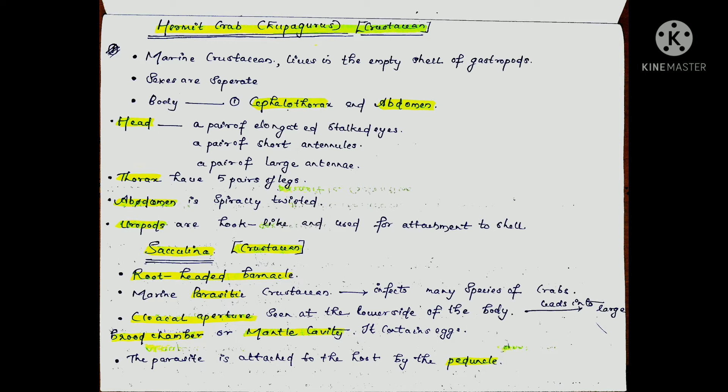Sacculina has a cloacal aperture which is seen on the lower side of the body, which leads to a brood chamber or mantle cavity containing eggs.